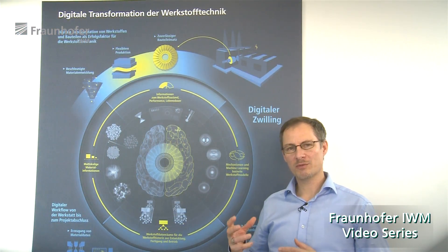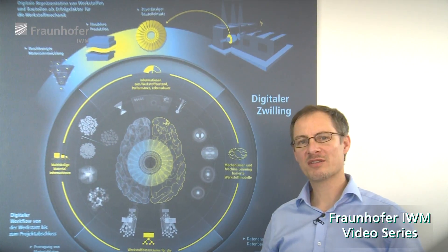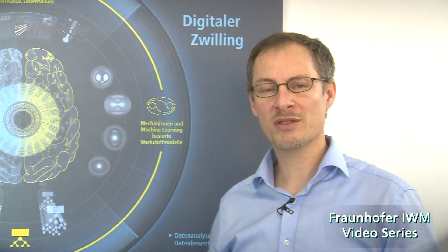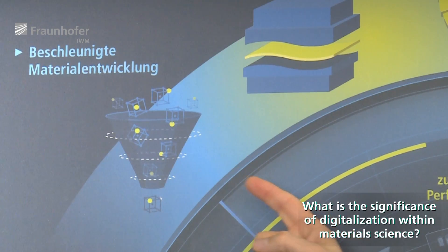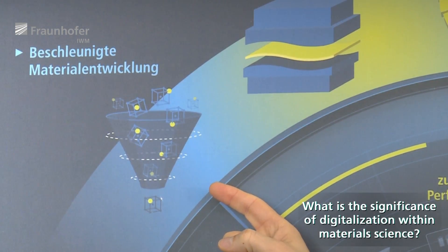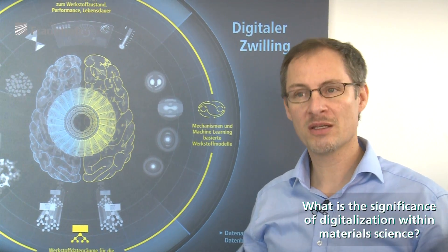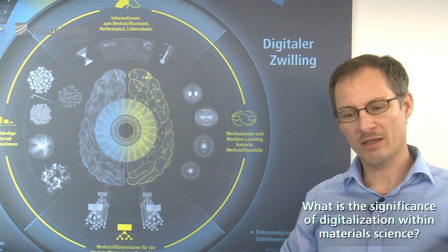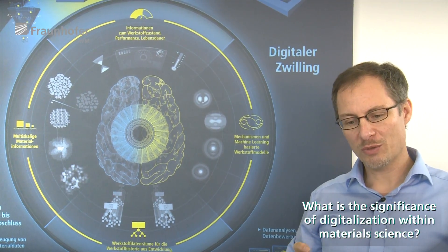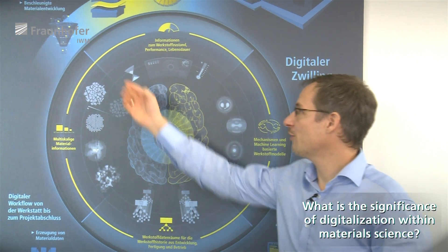If we think about the relevance of material science in the context of digital transformation — for example Industry 4.0 in Germany or Europe — the question arises: what can material science help with? If we want to accelerate materials development, for example magnets or piezoelectric materials or anything like this, then we need flows in terms of how we develop things which are faster than before.